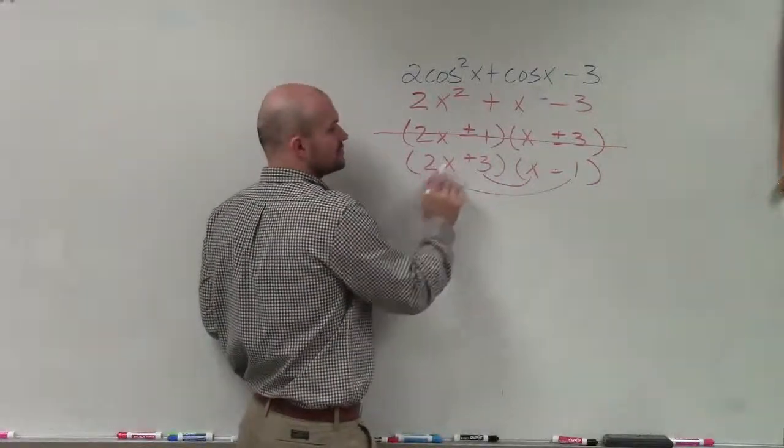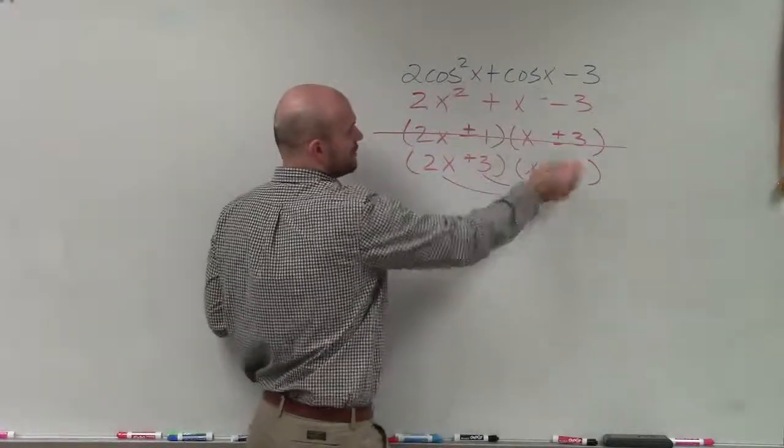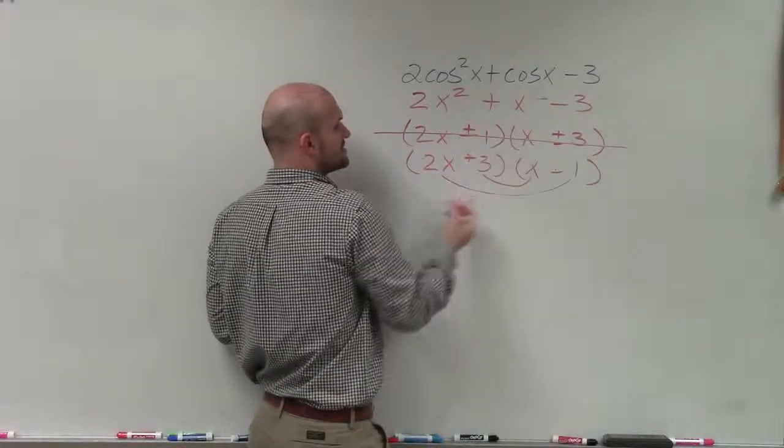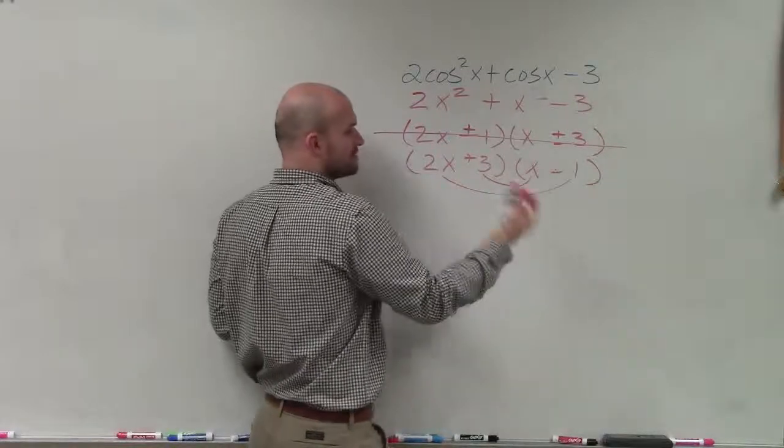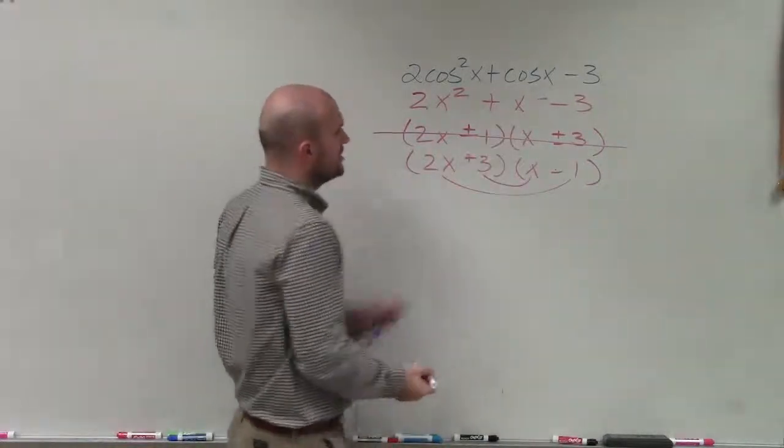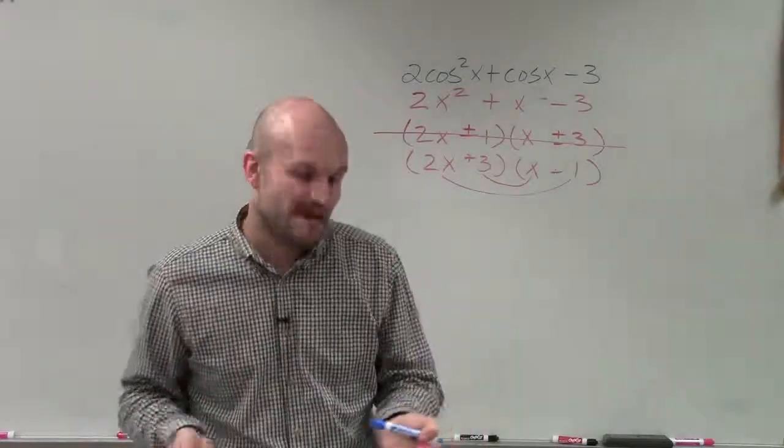And let's just carry this out. We know 2x times x is 2x squared. 3 times negative 1 is negative 3. 3x plus 2x times negative 1, which is negative 2x, is just going to leave us with 1x. So therefore, I know that's going to be my factored form.